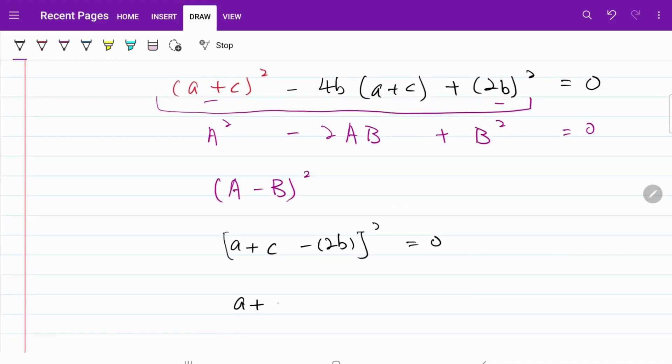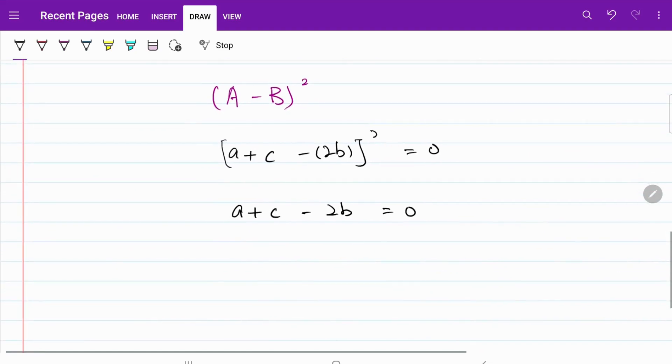From here, of course, I have a + c - 2b = 0. I can rearrange this equation to be (a - b) + (c - b) = 0.